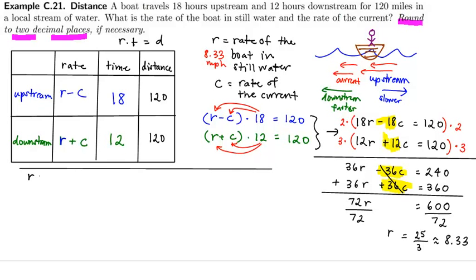So if I let r be equal to 8.33, this means that 12 times 8.33 plus 12c equal to 120. So first let me multiply 12 times 8.33, which is 99.96 plus 12c equals 120.